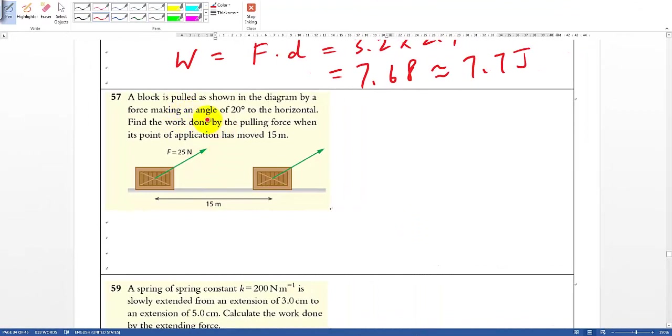Next one. Now it has a force that has an angle of 20 degrees here. Calculate the work done by the pulling force. Again, it's quite straightforward—you also use the equation, but you have to take the cosine theta, cos 20 degrees to the horizontal.